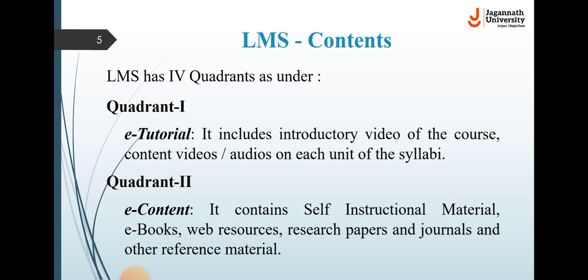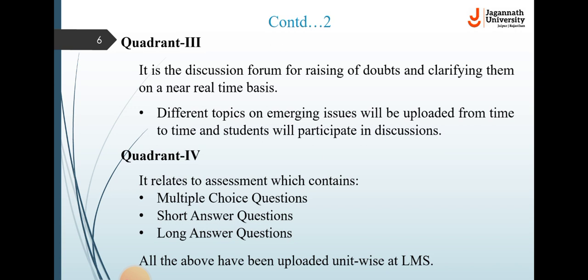Quadrant two contains e-content of self-instruction material, which includes e-books, web resources, research papers and journals, and other reference material. Quadrant three is the discussion forum for raising doubts and clarifying them on a near real-time basis. Different topics on emerging issues will be uploaded from time to time and students will participate in discussions.